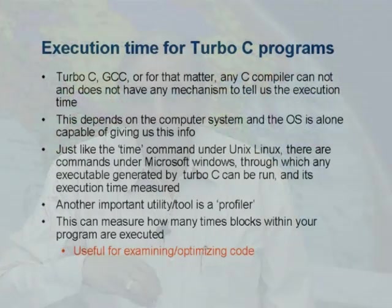How do we find this time information? Just like the time command under Unix or Ubuntu, there are commands under Microsoft Windows through which any executable generated by Turbo C can be run and its execution time measured. For the less initiated, I suggest a simple mechanism: open a command window, give the command 'time /t' to get the current clock time, run your program, then give 'time /t' again. The difference between the two times roughly tells you the clock time elapsed.